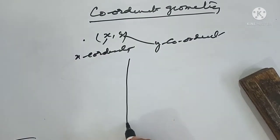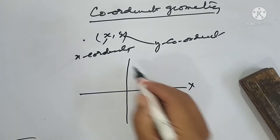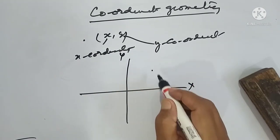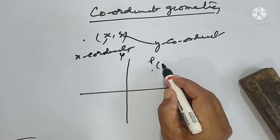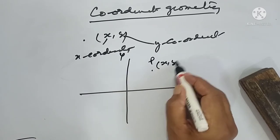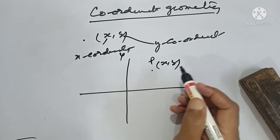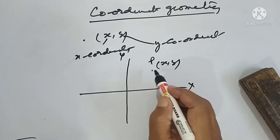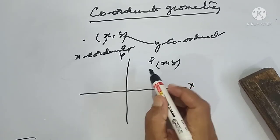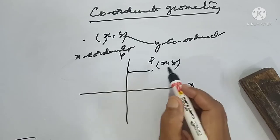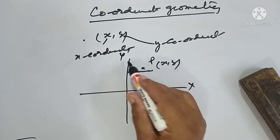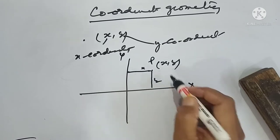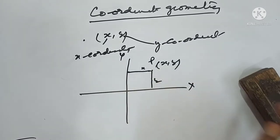On a graph with an X axis and Y axis, a point represented as (X, Y) can be defined as a position which is X distance away from the Y axis, and Y distance away from the X axis. So this is called an ordered pair.